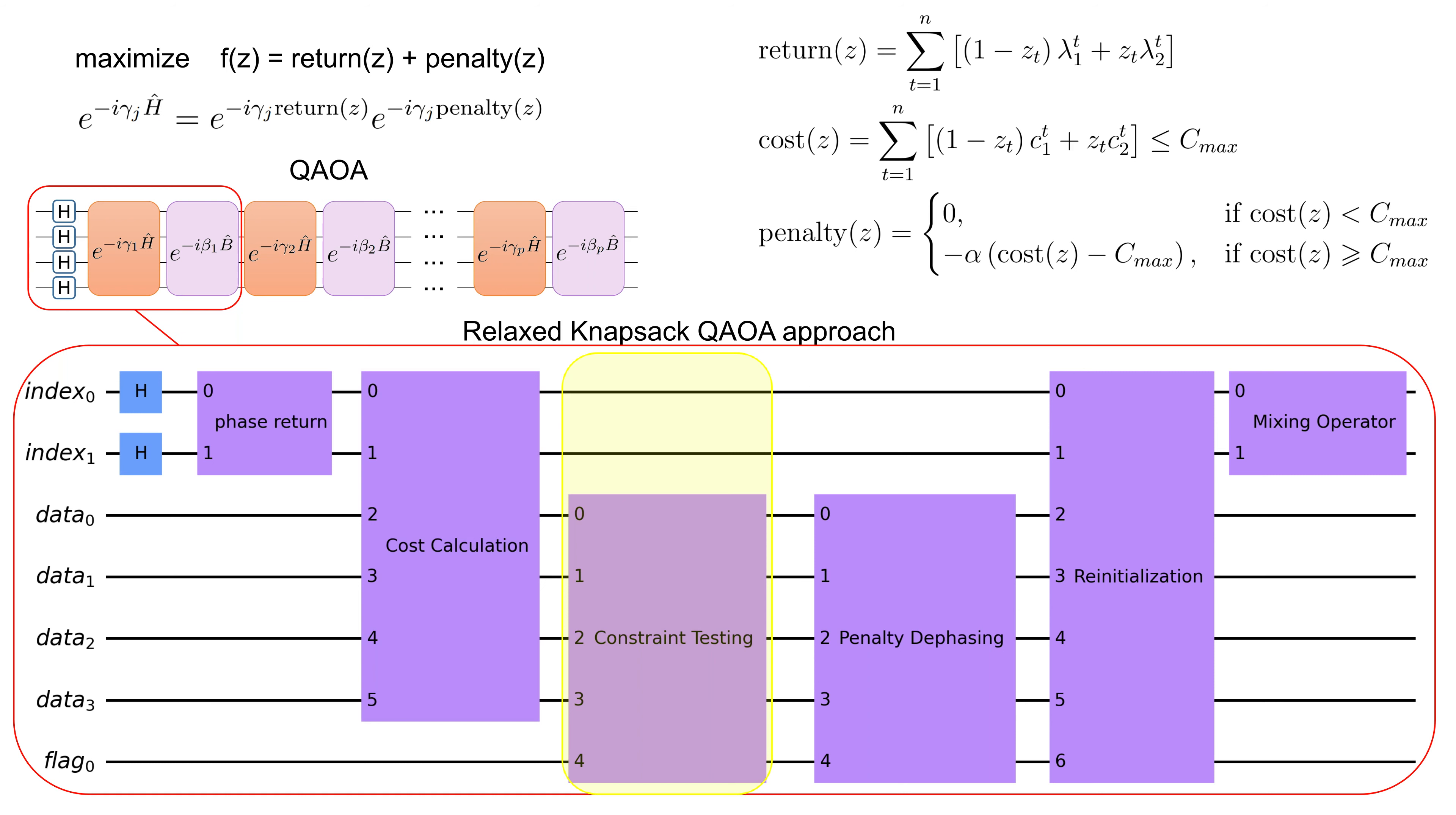During the constraint testing, we mark the states with a total cost larger than CMAX. Then we perform a penalty defacing. In other words, we subtract the penalty value from the marked states. Reinitialization is required just to reset the data and flag qubits.